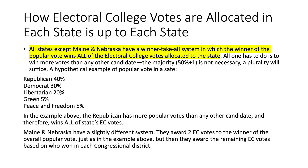How electoral college votes are allocated is a very important topic. Each state decides how to translate popular votes into electoral college votes. In all states except Maine and Nebraska, all one has to do is win more votes than any other candidate — a plurality. A majority of 50% plus one is not necessary.